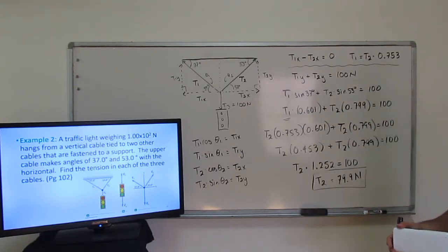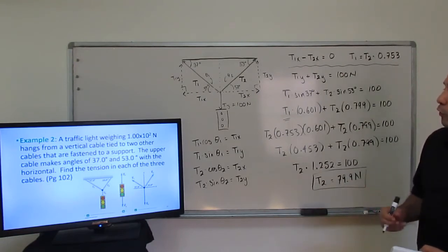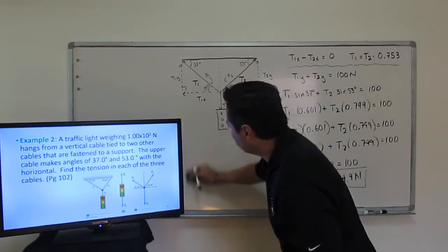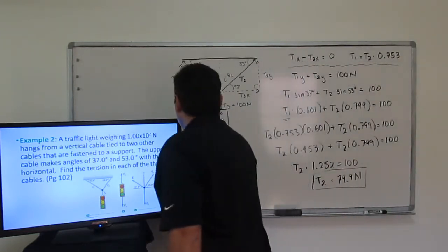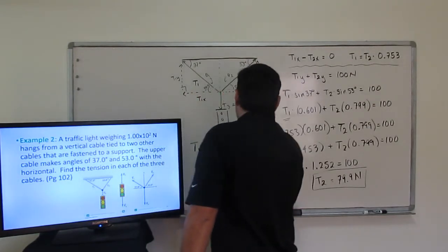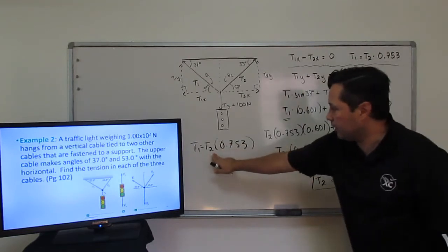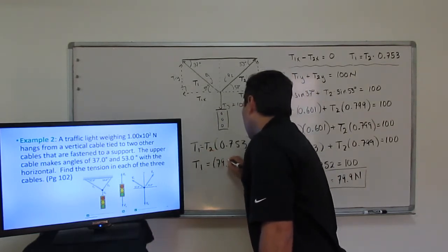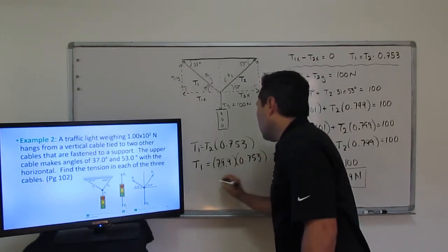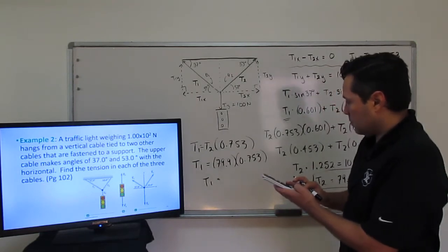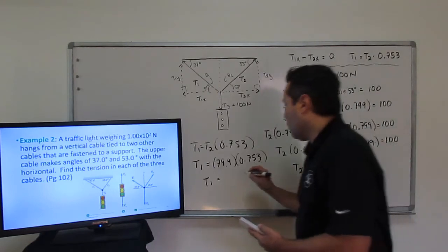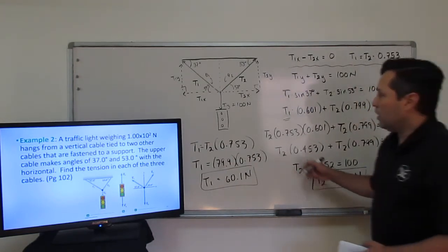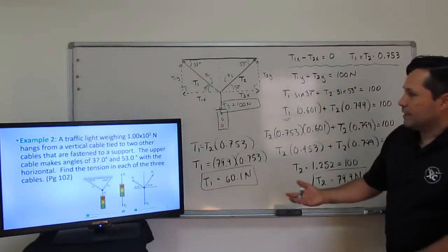With T2 = 79.9 N, we can now find T1. Using T1 = T2 × 0.753: T1 = 79.9 × 0.753 = 60.1 N. So our final answers are T1 = 60.1 N, T2 = 79.9 N, and T3 = 100 N. That takes care of example number 2.